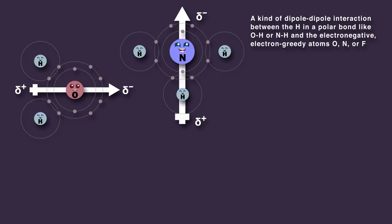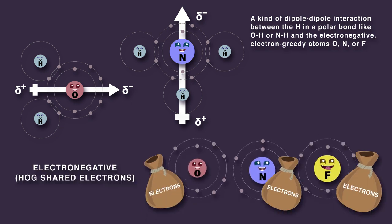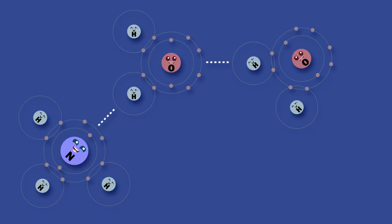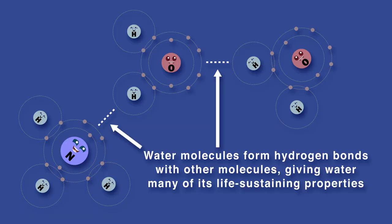The strongest van der Waals interactions are hydrogen bonds. This special kind of dipole-dipole interaction forms between the hydrogen in a polar bond like OH or NH, and the electronegative electron-greedy atoms O, N, or F, which is the most electronegative atom. For example, water molecules form hydrogen bonds with other molecules, giving water many of its life-sustaining properties.